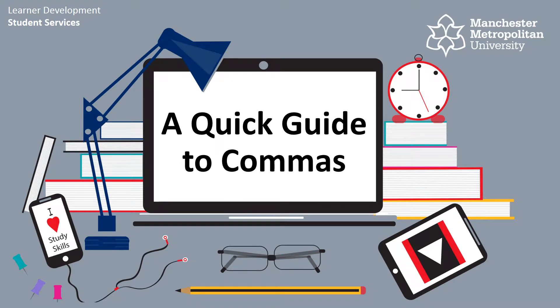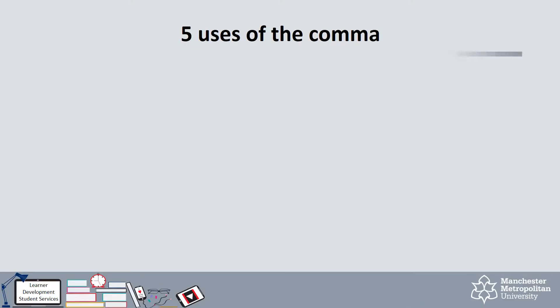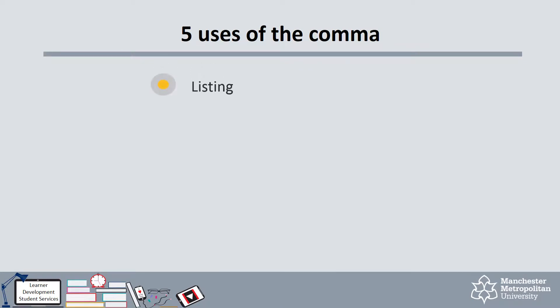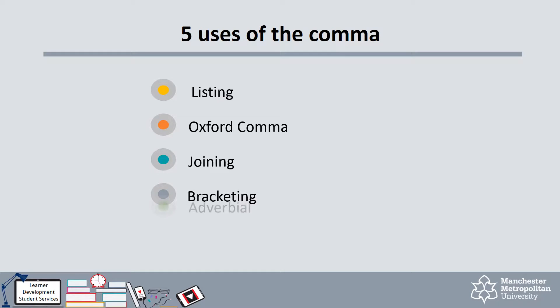Welcome to a quick guide to commas from the Learner Development Service at Manchester Metropolitan University. Commas are one of the most problematic pieces of punctuation in academic writing, so we'll go over five main uses of the comma to help you check your use and correct. There are five main uses of the comma you need to be aware of: listing, the Oxford comma, joining, bracketing, and adverbial. This guide will explain each of these commas with examples.